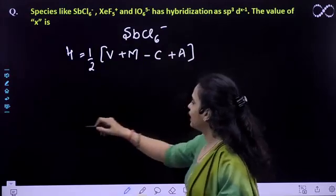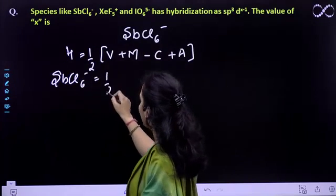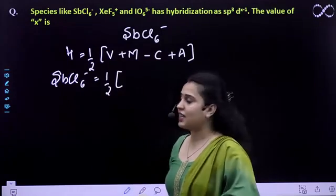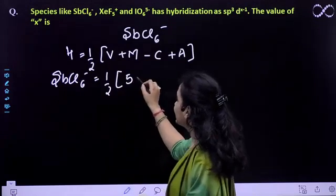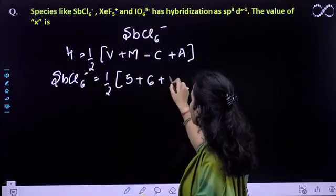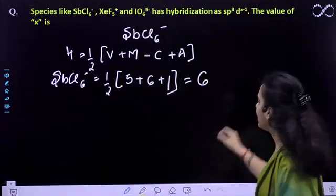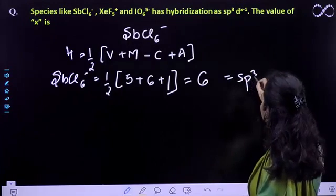So if we calculate it for SbCl6⁻, it will be half of - Sb has how many electrons in the outermost shell? 5, plus how many monovalent are attached with it? 6, plus the anionic charge on it is 1. So the hybridization number is 6, this is sp³d².